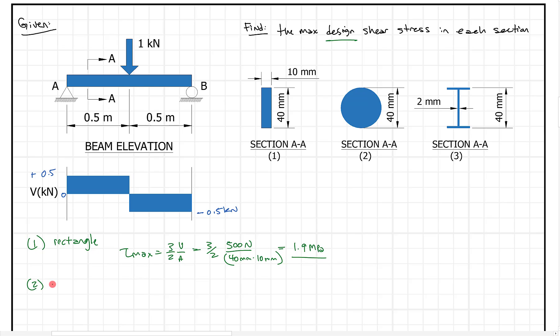For part two, section two, let's look at the circle. This tau max is going to use the formula four-thirds V over A. So here, what do we get? We get four-thirds times V, again 500 newtons. That's our maximum shear force based on the shear diagram. Half kilonewton is 500 newtons. And I can write that in there. This is half of a kilonewton, which comes right from either here or here. Both of them will give us the same thing.